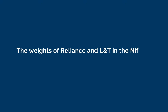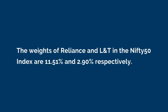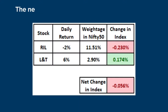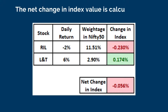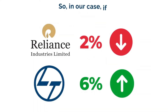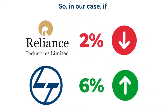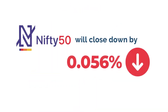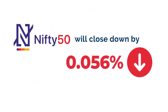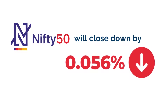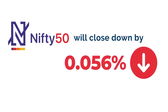The weights of Reliance and L&T in the Nifty 50 index are 11.51% and 2.90% respectively. The net change in index value is calculated as follows. So in our case, if Reliance goes down by 2% and L&T goes up by 6%, Nifty 50 will close in the red, down by 0.056%. Hope this calculation is clear to you.